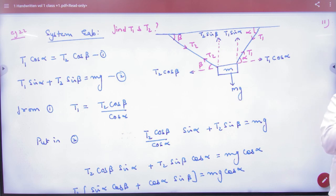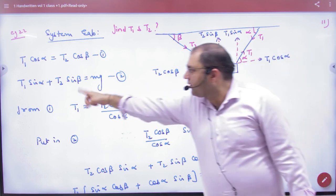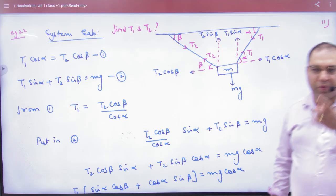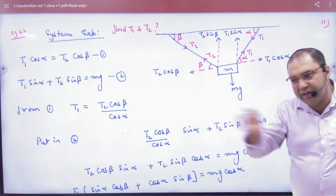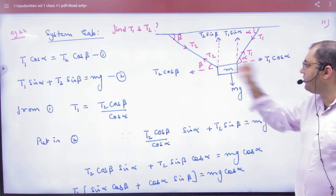And because it is in equilibrium, the upper and lower forces are equal. So the upper forces T1 sin alpha plus T2 sin beta equals mg. This is the first equation. And the left and right forces are equal.